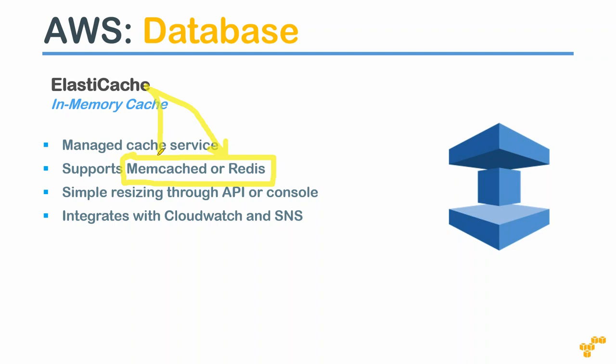The choice between Memcached and Redis depends on your application. The cost depends on the sizing of your cache. It integrates with CloudWatch for monitoring and SNS for notifications. Some architectures take advantage of ElastiCache and some don't need it. If all pages are generated dynamically and you need to check session validity each time, memcache won't be used. But if there are cacheable elements, recommend ElastiCache to your clients.